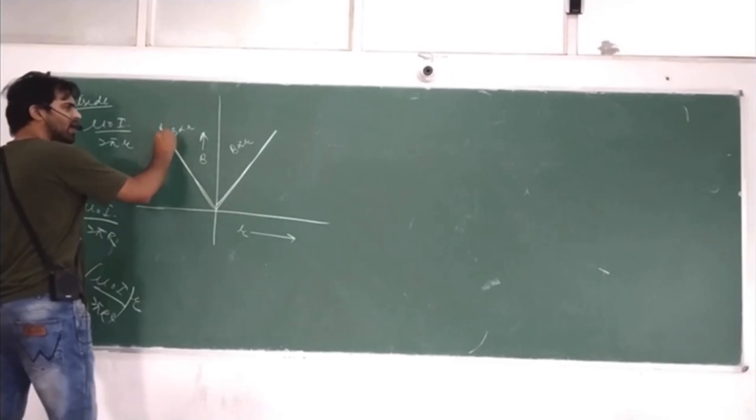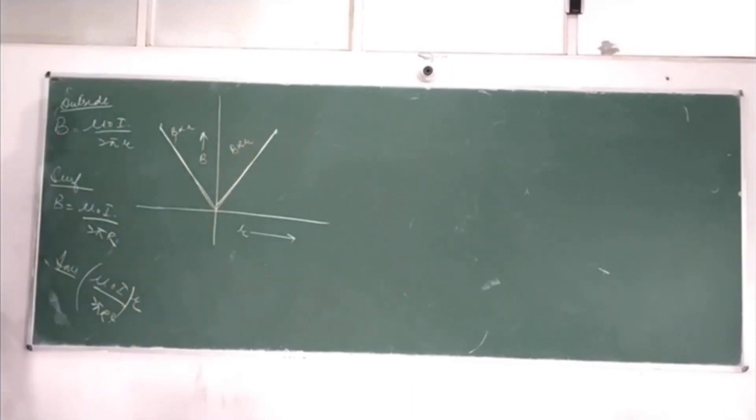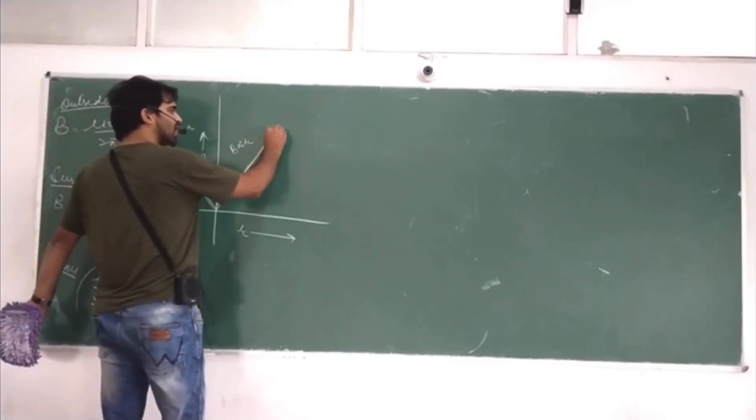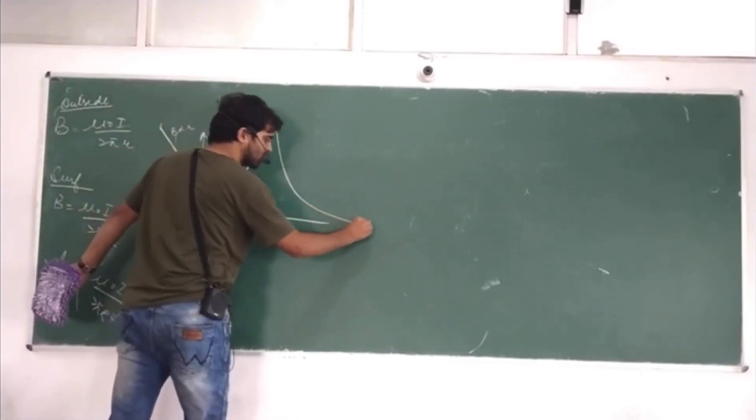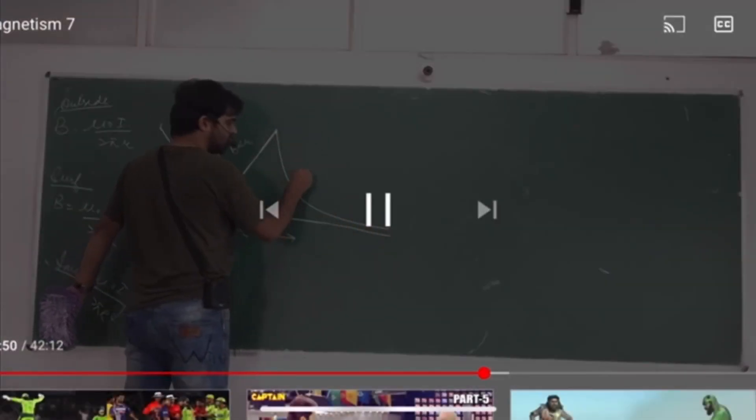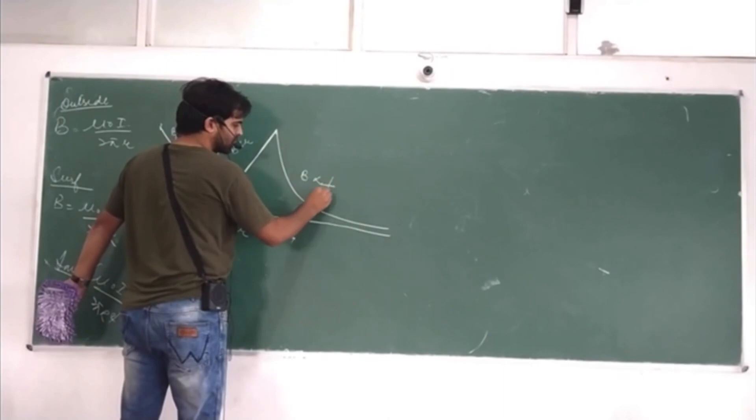The surface is maximum. Outside, the graph is inversely proportional to r. It's a hyperbolic curve. B is inversely proportional to R.